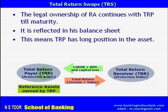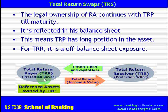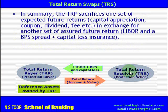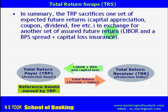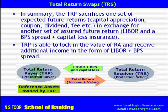In other words, TRP has a long position in the asset — he is holding this asset. For TRR, it is only an off-balance sheet exposure. In summary, TRP is sacrificing one set of future returns in the form of capital appreciation, coupon, dividend, fee, etc., in exchange for an assured future return in the form of LIBOR plus spread, plus insurance against capital loss. In this manner, TRP locks the value of the reference asset and receives additional income in the form of LIBOR plus basis points spread.